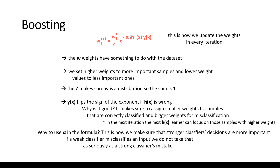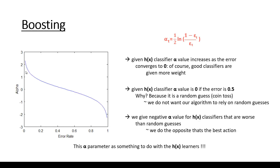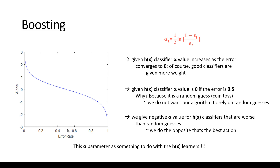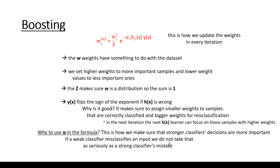You may ask why we include alpha in the exponent. Because this is how we make sure that stronger classifiers' decisions are more important. If a weak classifier misclassifies an input, we do not take that as seriously as a strong classifier's mistake. Why? Because if the alpha value is high, it means the error rate is low — so it is a strong classifier. This is how we ensure that a strong classifier's decisions are more important, by multiplying the exponent by alpha. If a weak classifier has alpha approximately 0.1 or 0.2, we do not take its mistakes as seriously as a strong classifier's.